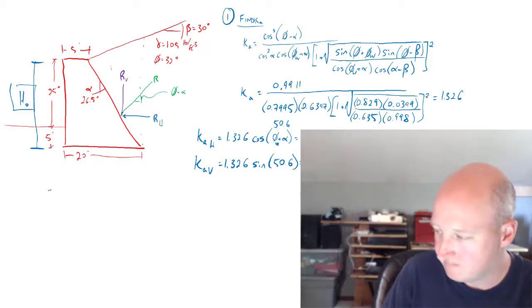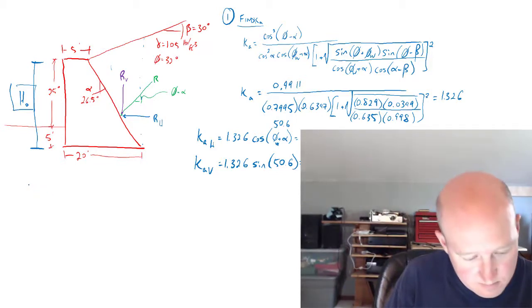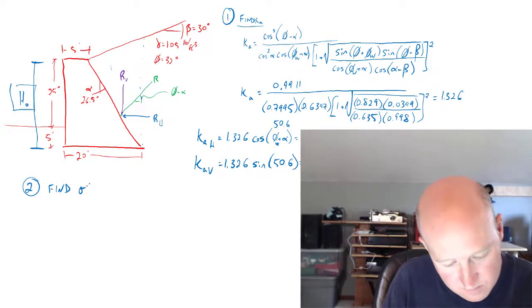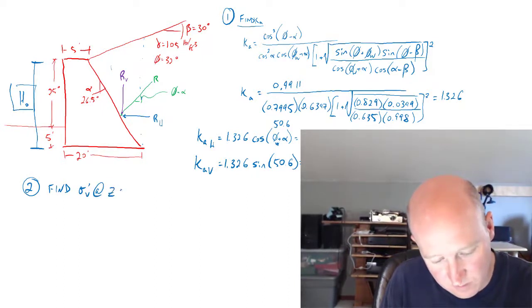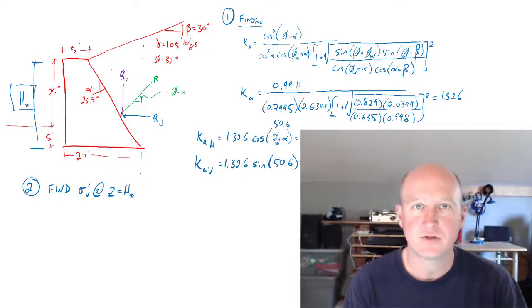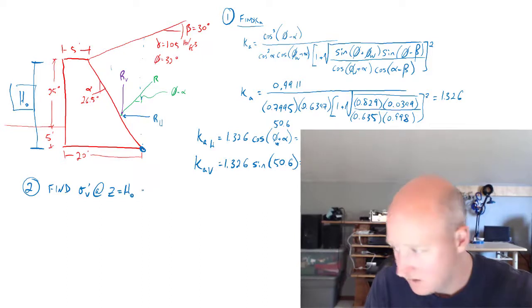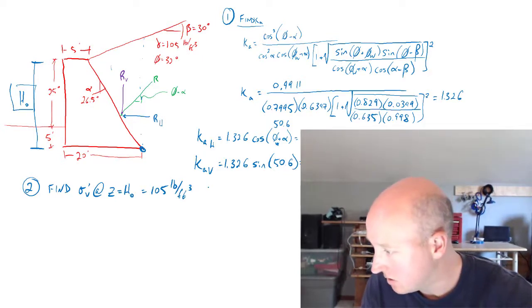So now let's find the vertical effective stress at z equals h naught. And so that's going to correspond. It's kind of strange to see because it doesn't exactly correspond with the bottom of this, but it is the right way to think about it. So let's find that vertical stress. That's 105 pounds per cubic foot times 30 feet.